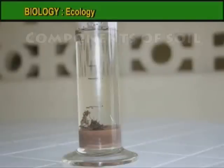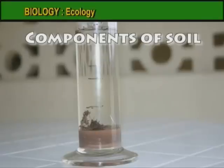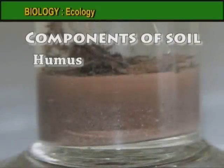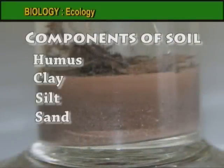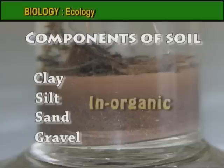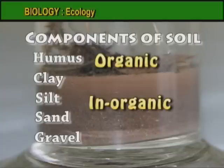Can you see the components of the soil? They are humus, clay, silt, sand, and gravel. Clay, silt, sand, and gravel are inorganic, whereas humus is organic.